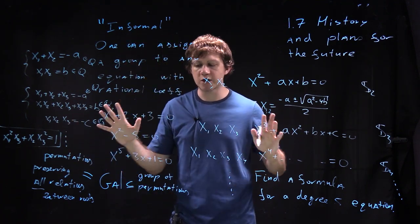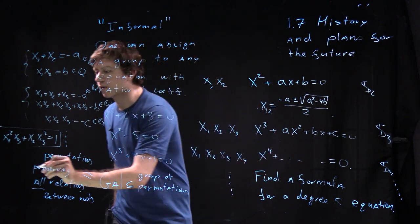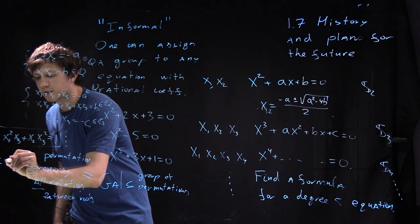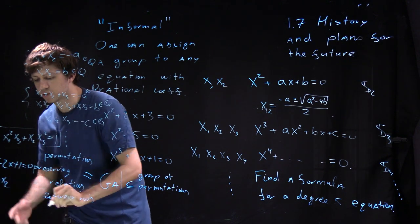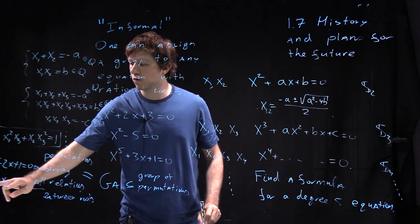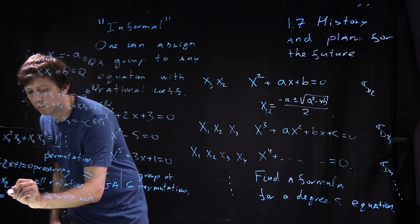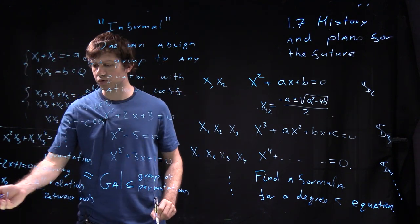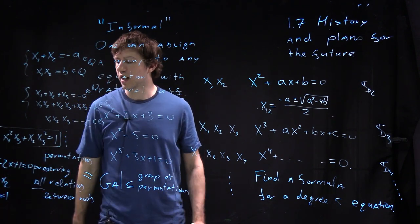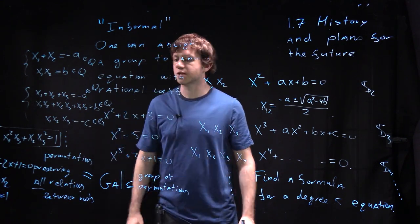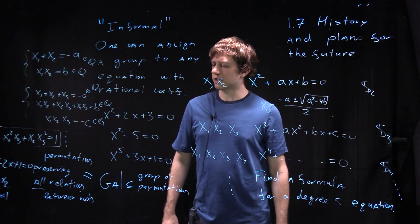But if you take an equation which is very special for instance let's say you take equation x squared minus 2x plus 1 equal to 0 then there is a relation x1 equal to x2 because the roots are the same and so or actually there is even a relation x1 equal to 1 which is a relation with rational coefficients and so it has to be preserved and so the group actually has to fix both of x1 and x2 which are the same here. Actually that's a bad example.